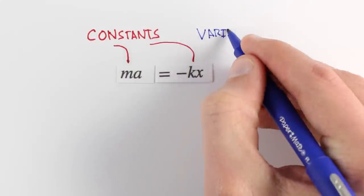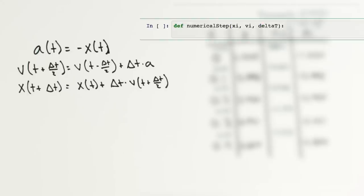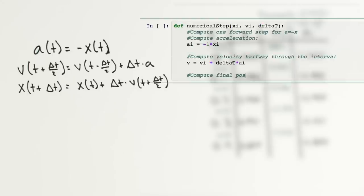Last time, we found an equation to describe the motion of a mass on a spring, and used it to figure out where our mass would go based on where it started.